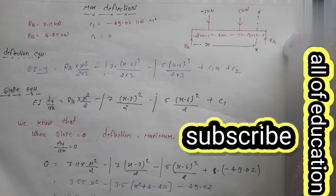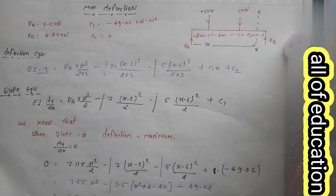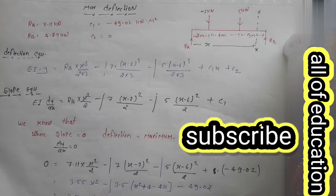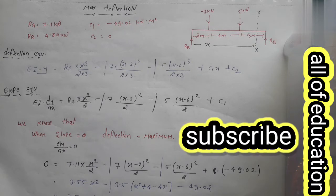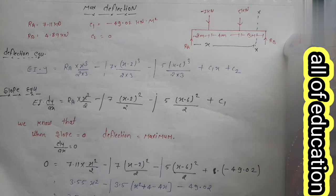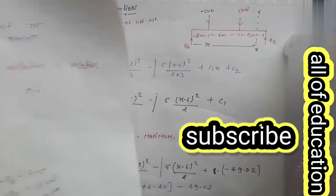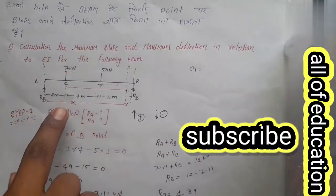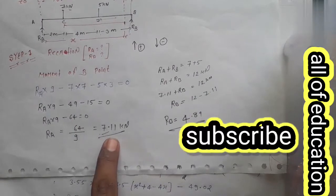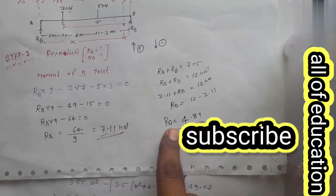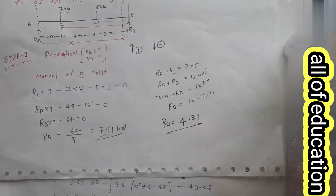हम revise कर लेते हैं कि Macaulay's method की सायता से कैसे maximum slope निकालते हैं। हमने first step में reaction निकाली थी - RA और RB। RA की value आई थी 7.11 kN और RB की value आई थी 4.89 kN।